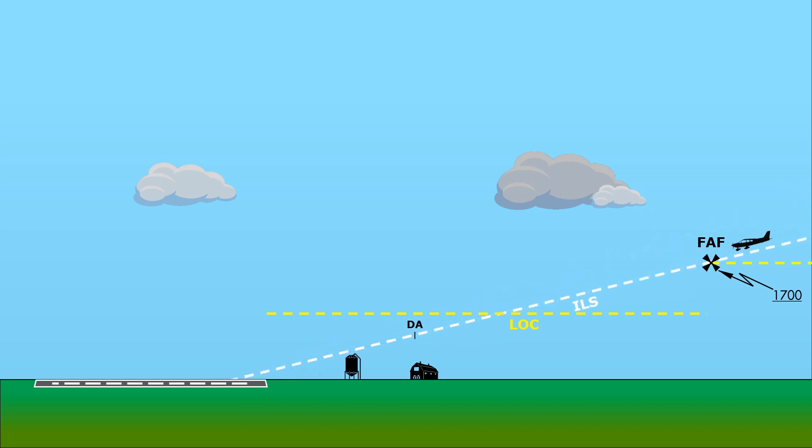Unlike on the localizer, the decision altitude on the ILS is a fixed point in space. It's an altitude along the glide slope. So besides just a specific altitude, it's also a specific distance from the runway, and crucially, from that obstacle.